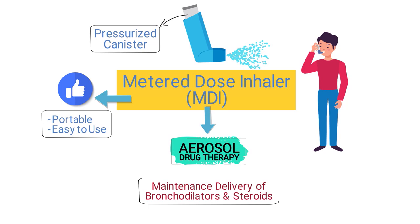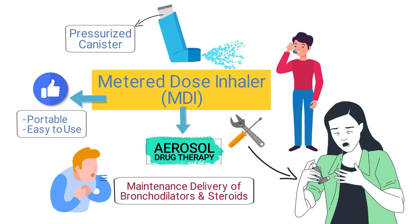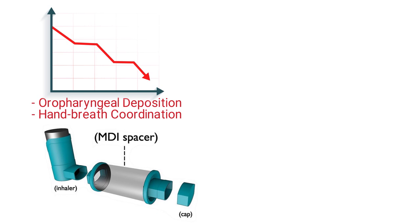However, MDIs are highly technique dependent, meaning you must instruct the patient on how to properly use the device; otherwise they may not receive the full dose. To reduce oropharyngeal deposition and the need for hand-breath coordination, spacers and valve holding chambers can be used. These are accessory devices that attach to the inhaler and hold the medication in a chamber with one-way valves, making it easier for the patient to inhale the medication and reducing waste.